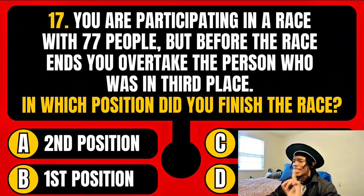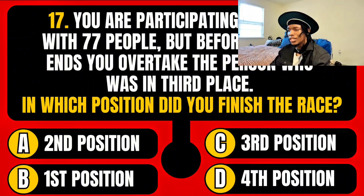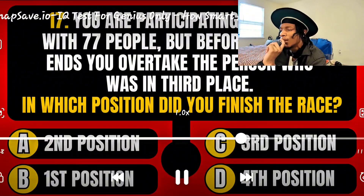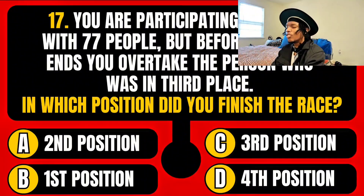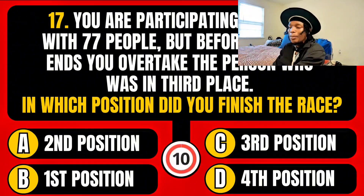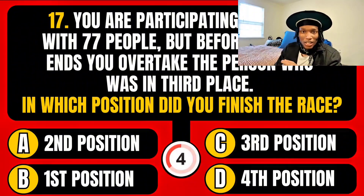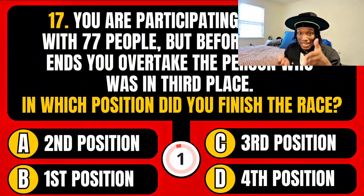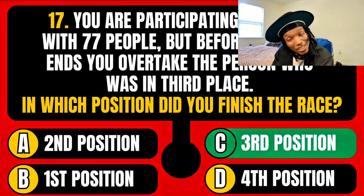Participating in a race with 77 people. Before the race ends, you overtake the person who was in third place. In which position did you finish the race? Second position? First position? Third position? Or fourth position? We'll pause to deduce this. There are 77 people in the race. If you overtake the person who was in third place, you are now in third place. What is the purpose of having all of these irrelevant information? It is third place, because once you surpass that position, you are in the position. The correct answer is option C — third position. Brilliance at its peak.